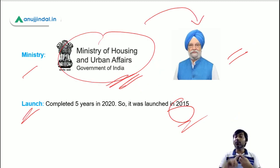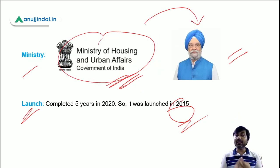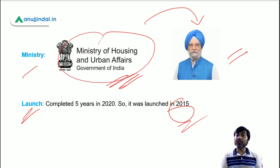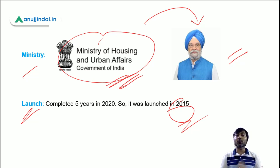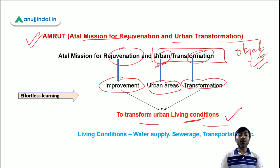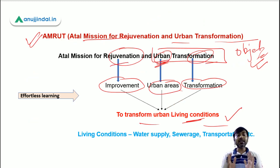So three things are now clear. First, the ministry is the Ministry of Housing and Urban Affairs. Second, the scheme completed 5 years in 2020, so it was launched in 2015. Third, the objective is clear because of the three words — Rejuvenation, Urban, and Transformation.